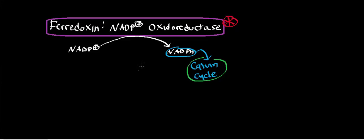It turns out that there are two kinds of electron flow in and around photosystem I: cyclic electron flow and non-cyclic electron flow. Non-cyclic electron flow means ferredoxin fed its electrons into this enzyme. However, under certain conditions, ferredoxin can actually feed its electrons back into cytochrome B6F. That process is called cyclic electron flow.